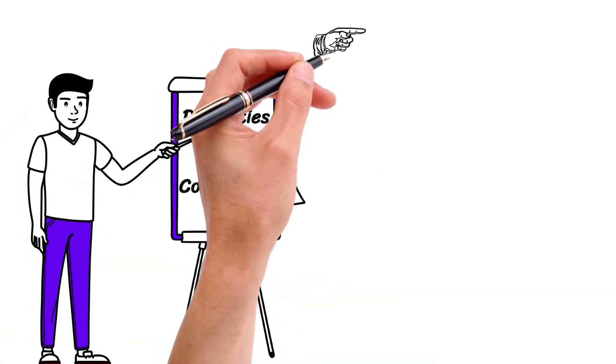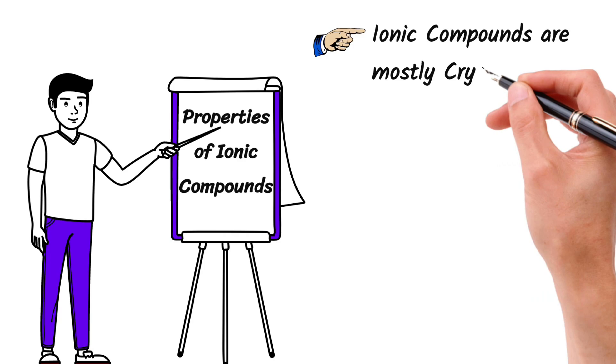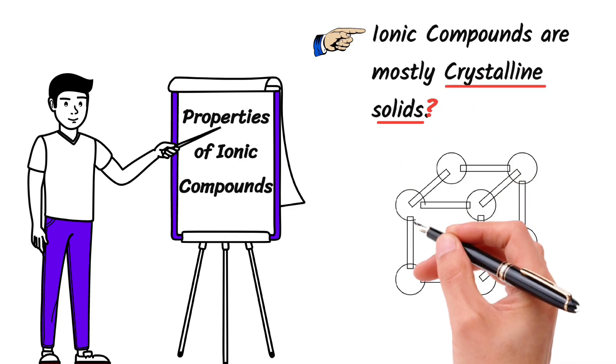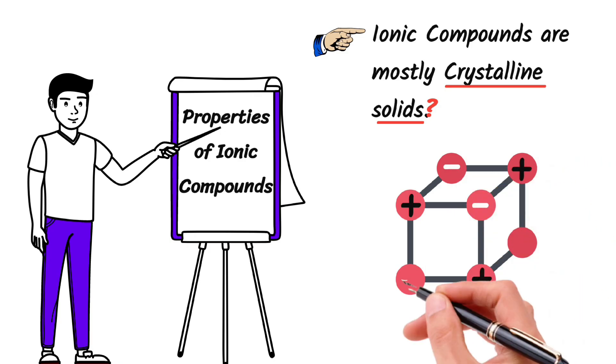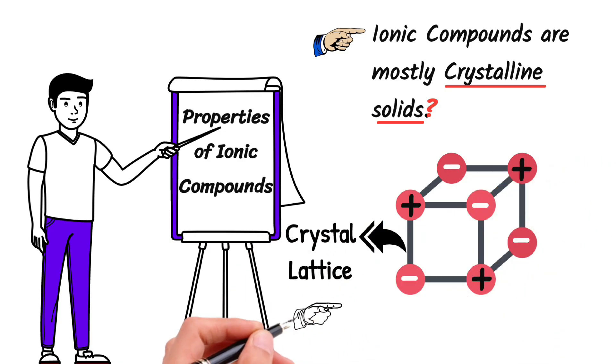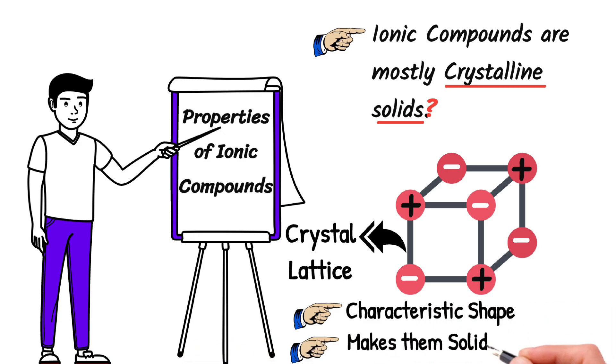Ionic compounds are mostly crystalline solids. Why are they crystalline solids? When positive and negative ions come together, they arrange themselves in a regular, repeating pattern called crystal lattice. This lattice structure gives ionic compounds their characteristic shape and makes them solid at room temperature.